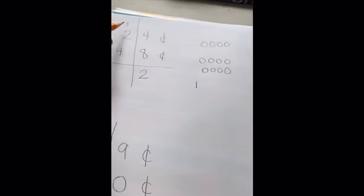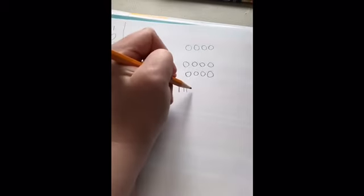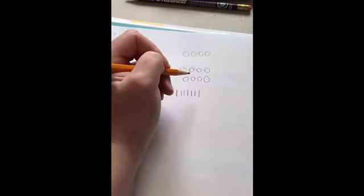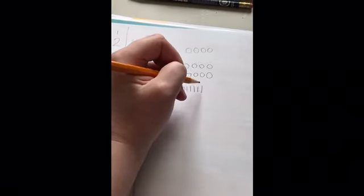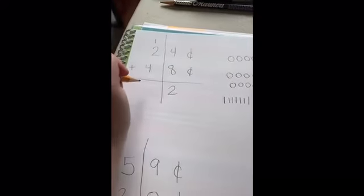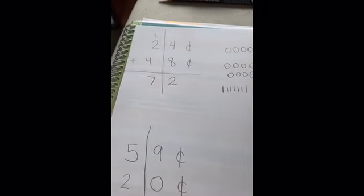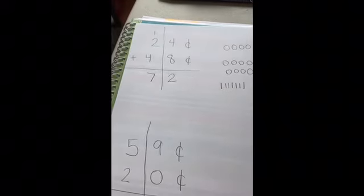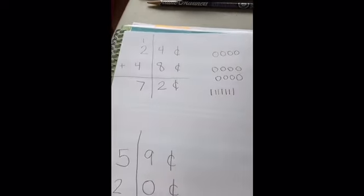I have one ten, two tens, four tens. One, two, three, four, five, six, seven. So one plus two plus four is seven. So twenty-four cents plus forty-eight cents is seventy-two cents.